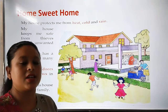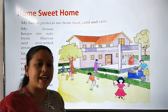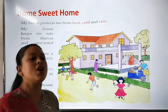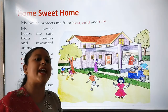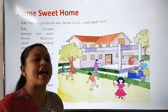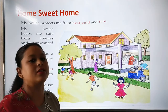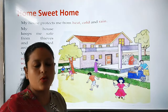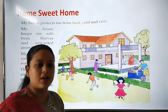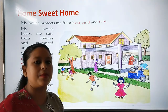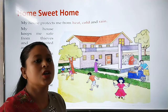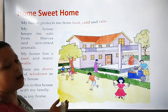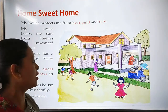Thieves means those who steal things, isn't it? They are called thieves. So a house also protects us from thieves and unwanted animals. Unwanted means wild animals also, because wild animals can harm us. So that is why a house protects us from wild animals also.